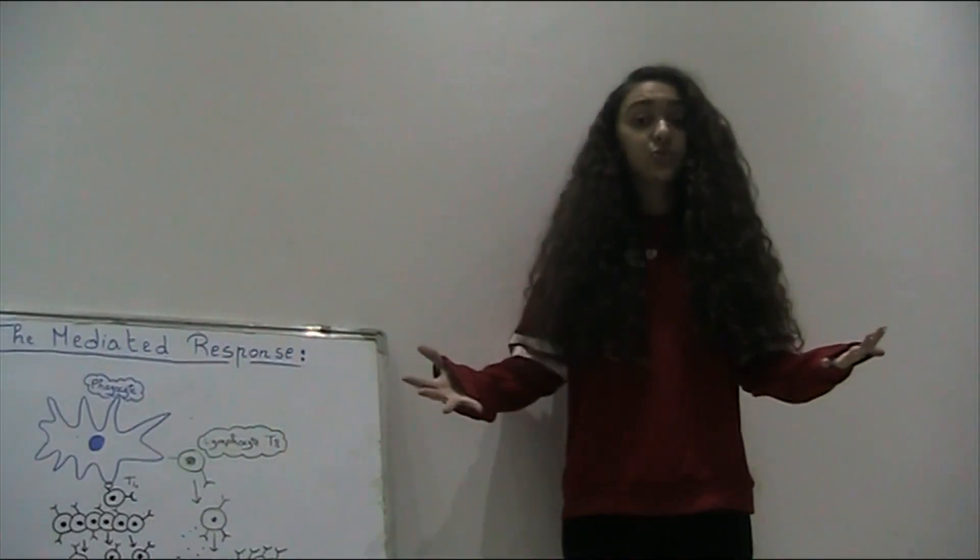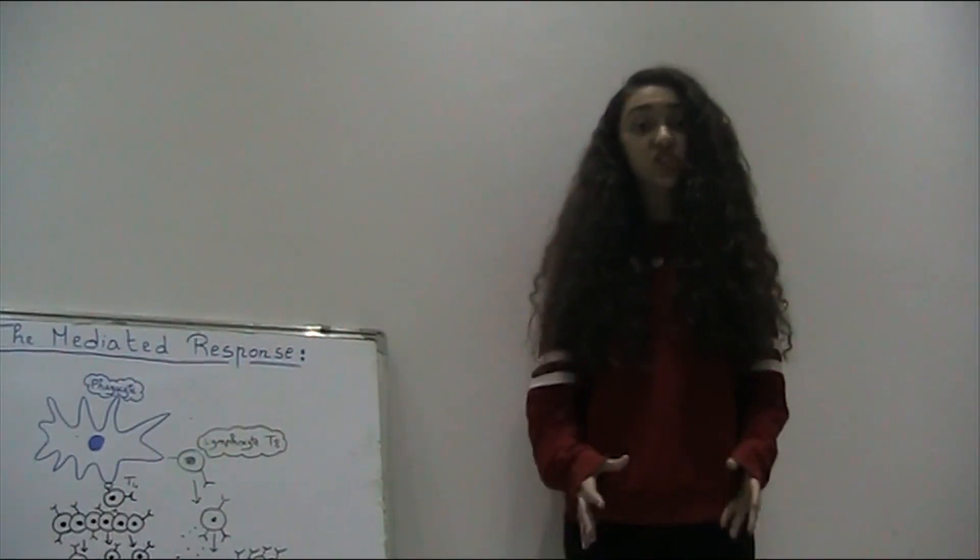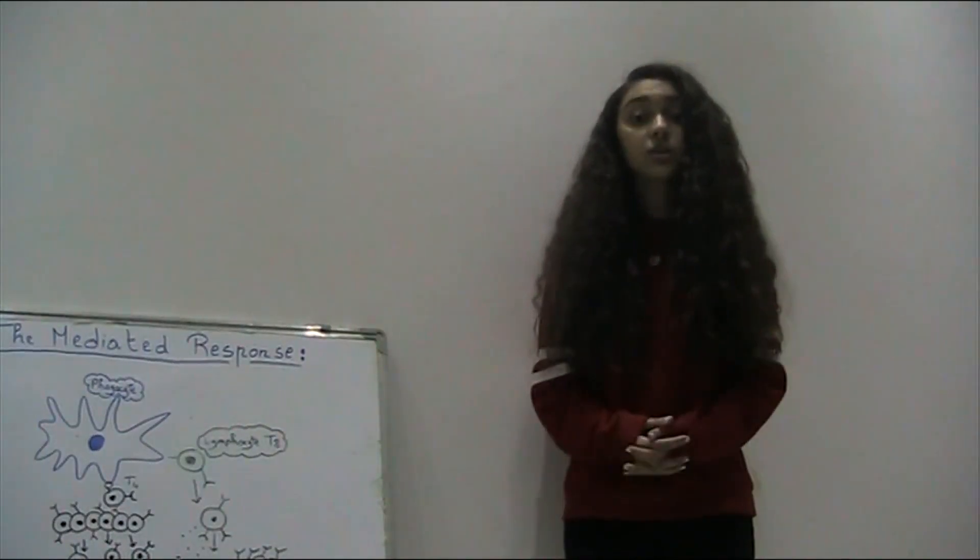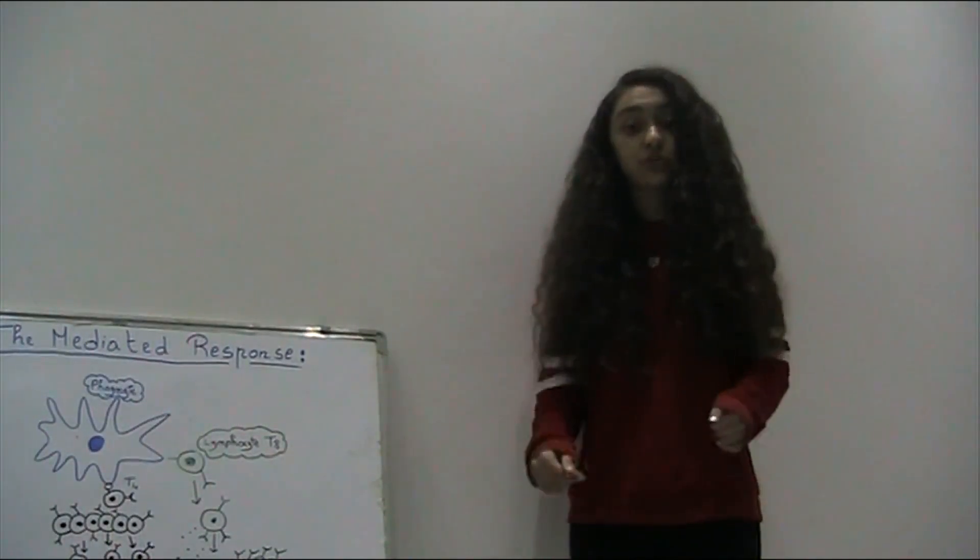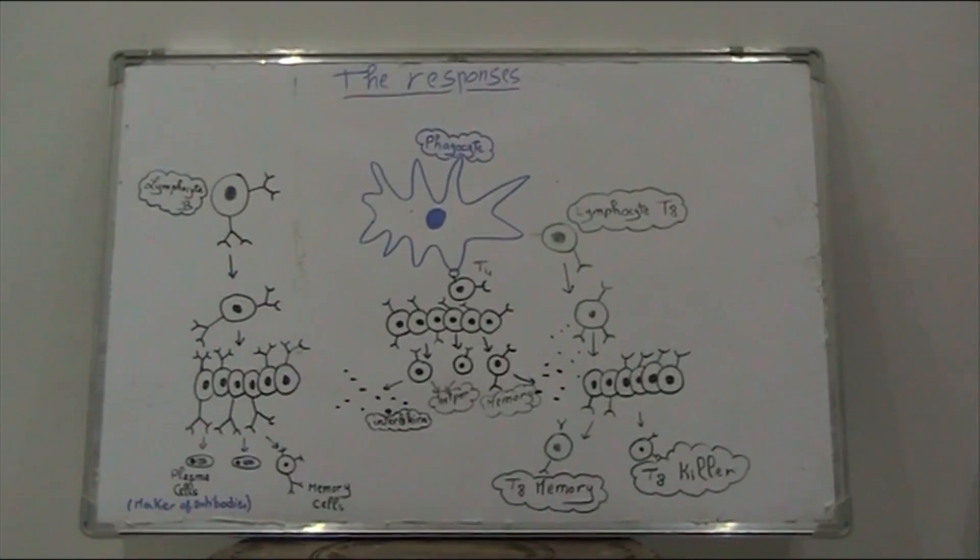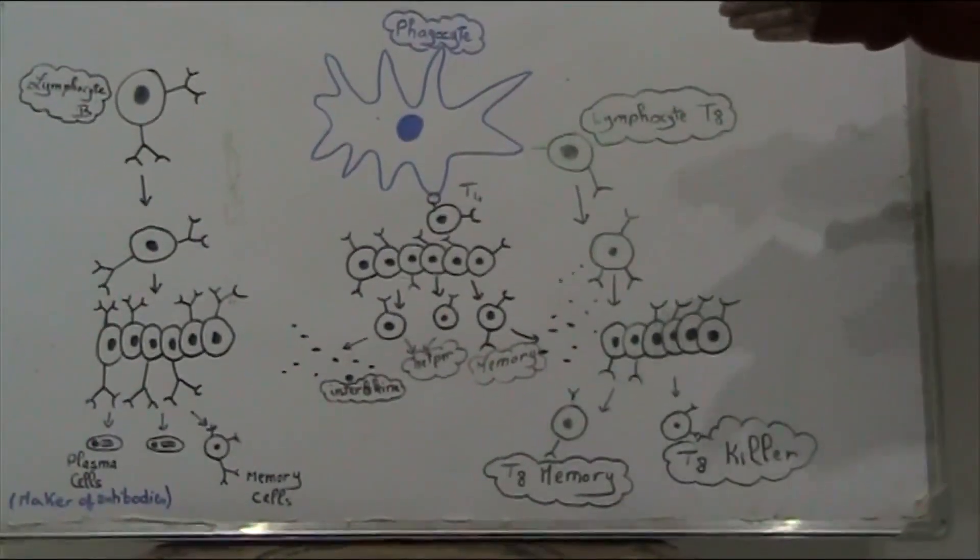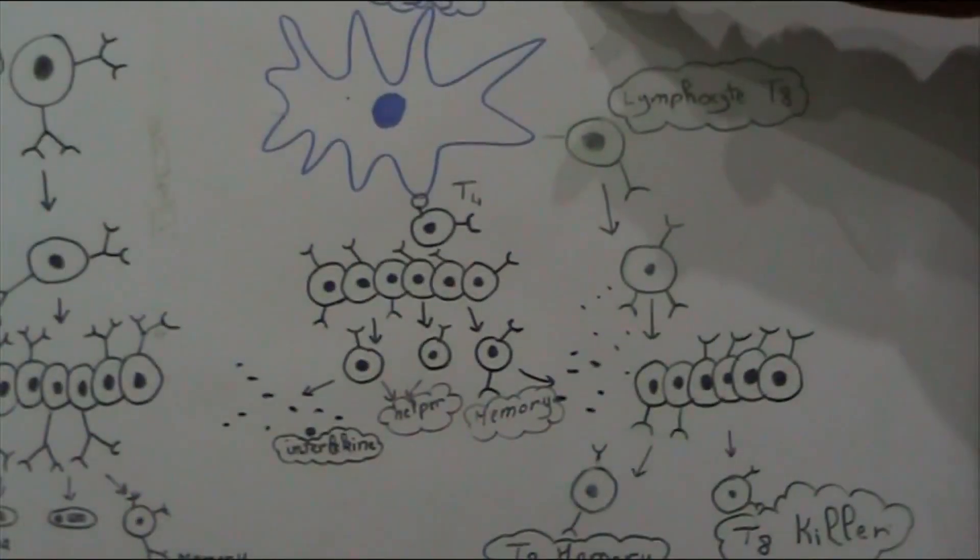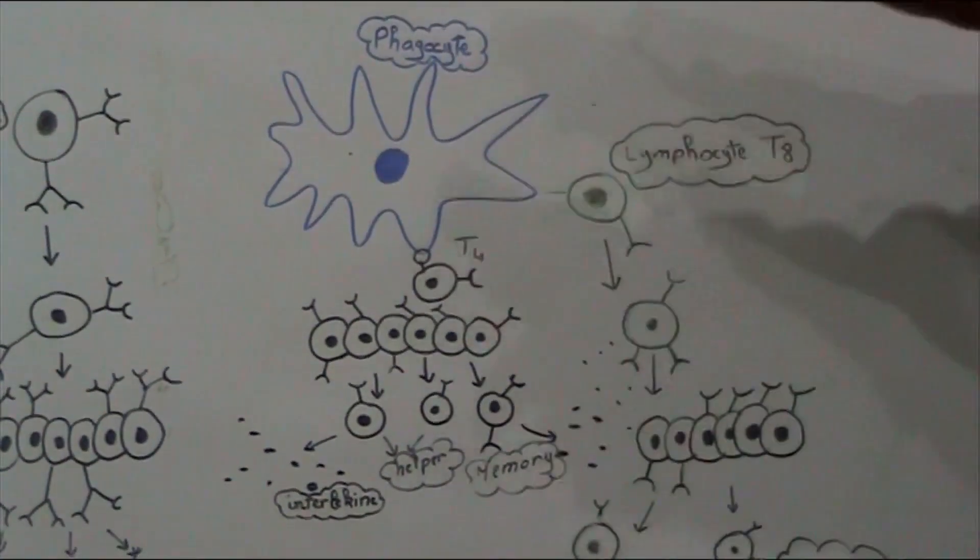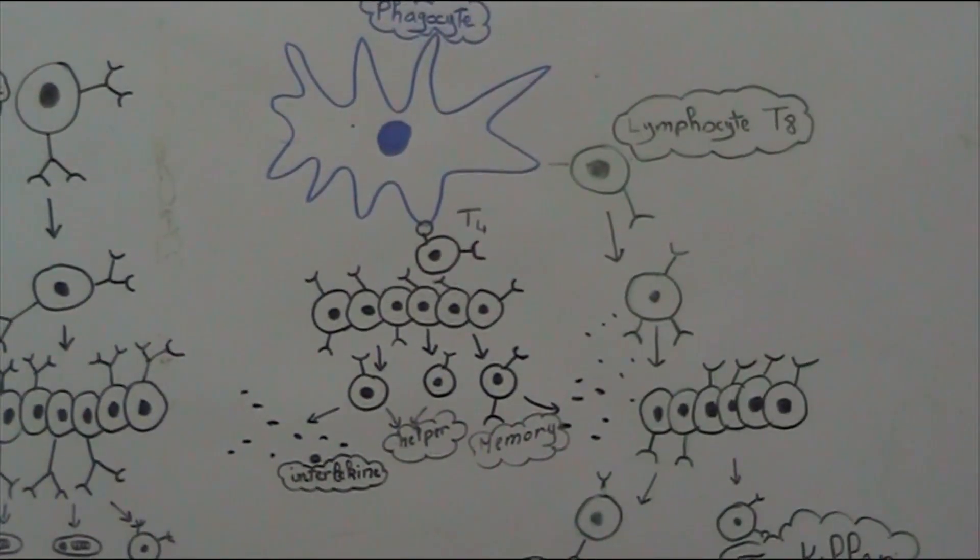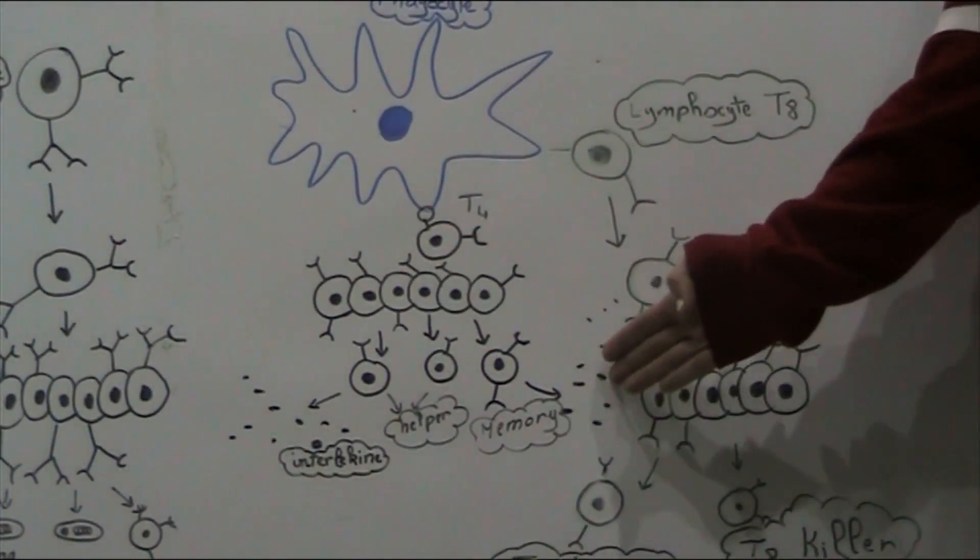So what is the mediated response? The lymphocytes, which are particular cells, allow the body to remember previous invaders. There are two types of lymphocytes, the cells B and cells T. T cells are activated when a specific phygocytes show them the nature of the antigen. Then T4 cells get multiplied and differentiate into T4 memory cells that will lead a long life. And T4 helper that release a particular protein known as enterlechin.